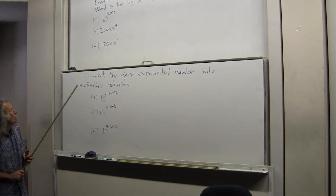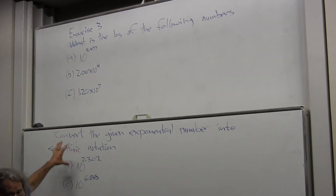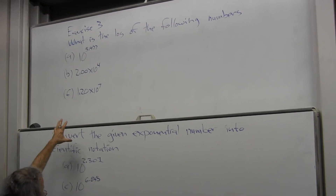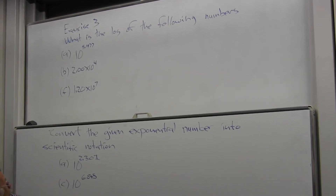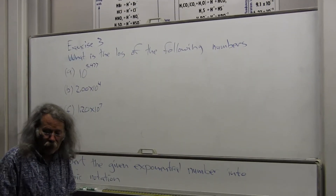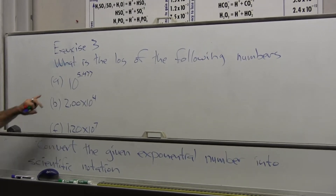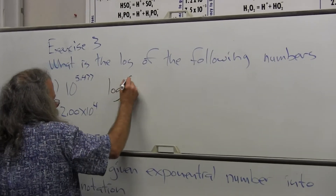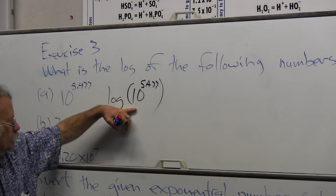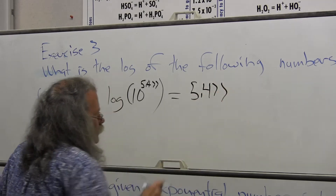Exercise 3 asks: what is the log of the following numbers? I'm going to pull the board down. Later we'll convert given exponential forms — we'll go both ways: from scientific notation to find the log, and from exponential form back to scientific notation. You have to be able to move easily between the two. The first one is easy: log of 10^5.477. That's pretty much the definition of what log is, using the convention that log implies base 10, so that equals 5.477.